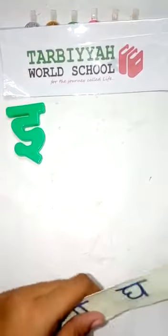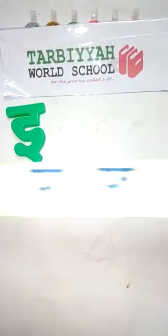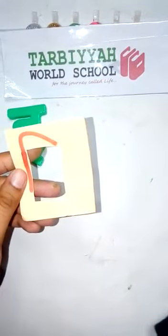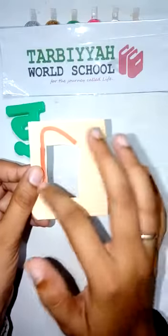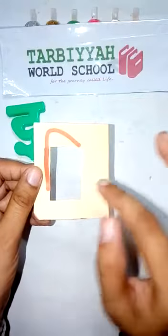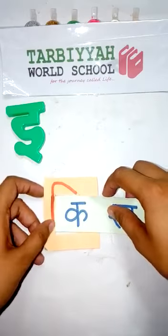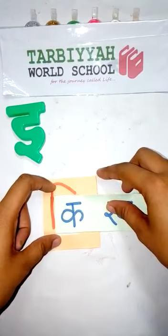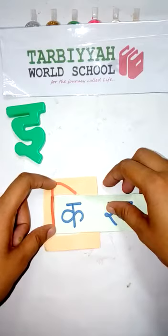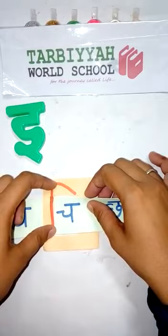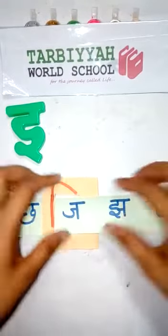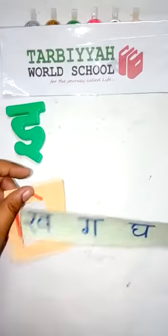Now students, we will do an activity of Choti E ki matra. You have to make a strip like this with the help of craft paper and write down the vanjans. And now make a paper like this — make a shape of a window, make a rectangle hole, and make a matra of Choti E. Now if we insert this paper into this matra and add Choti E ki matra, you can see how it produces the sound: Ki, Khi, Ghi, Chi — like this. We have prepared the Choti E ki matra activity.